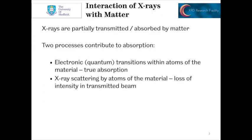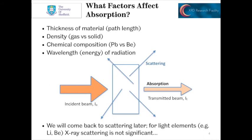To answer that question, we have to talk about how X-rays interact with matter. X-rays are partially transmitted and partially absorbed by matter. There are two processes that contribute to this absorption: true absorption — electronic transitions within the atoms of the material — and X-ray scattering, which causes a loss of intensity in the transmitted beam. There are various factors that affect absorption. The thickness and density of the material are the two key factors. Also, the chemical composition — things like lead will absorb a lot more than beryllium.